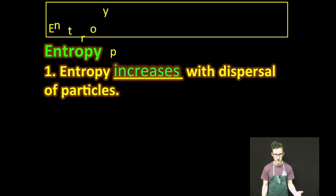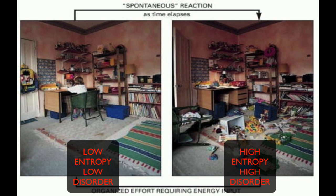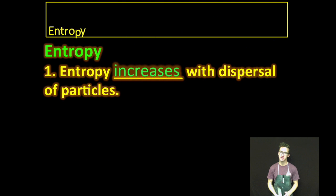Now, as we think about entropy, as we think about the second law of thermodynamics, some things to keep in mind. One, entropy will increase with the dispersal of particles. Entropy will increase with the dispersal of particles. In other words, we see things that are more disordered the more spread out they are.